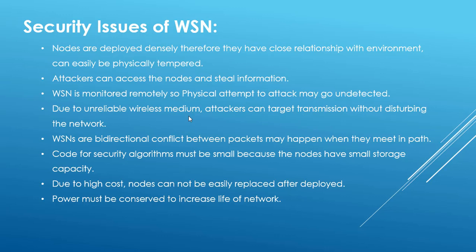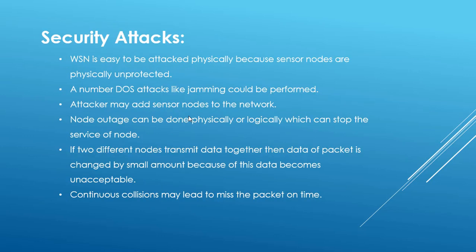Because the replacement of nodes costs a lot, nodes cannot easily be replaced once deployed. Power must also be conserved to increase the life of the network — this is especially important in wireless sensor networks because they are powered by a source not connected to the electricity grid, such as a battery. Next, we will look at what types of attacks may be made against wireless sensor networks.